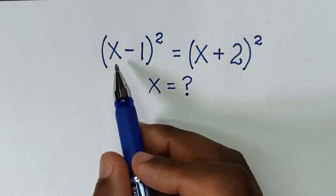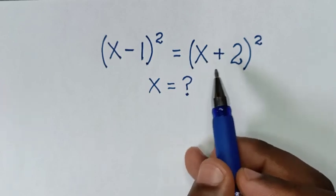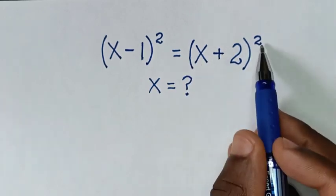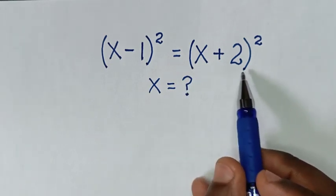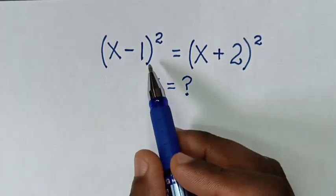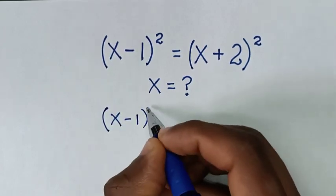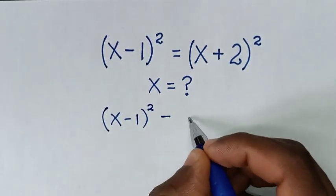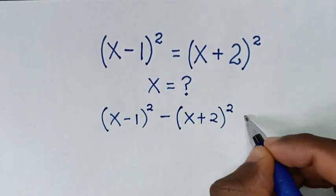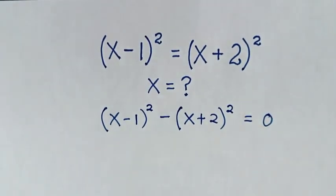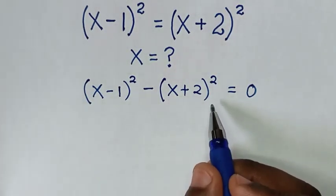Hello. How to solve (x minus 1) bracket power of 2 is equal to (x plus 2) bracket power of 2, to find the value of x. First, we take this (x plus 2) bracket power of 2 to this side, so it will be (x minus 1) bracket power of 2 minus (x plus 2) bracket power of 2 is equal to 0. This part is in the form of a difference of perfect squares.